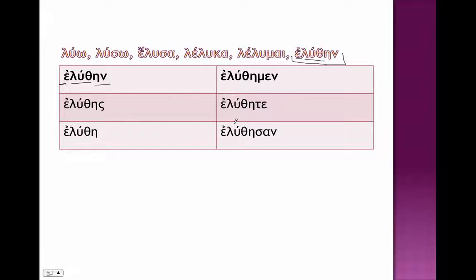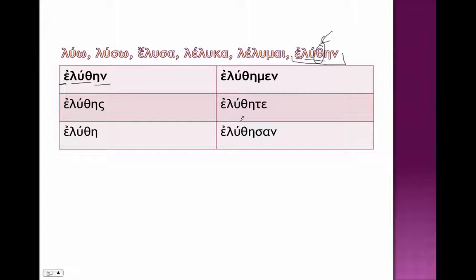One thing to keep in mind when you're reading Greek: most aorist passive endings, most sixth principal parts, have a stem that ends in theta. So if you see a stem that ends in theta, that's most likely what you're dealing with — theta plus the endings: eleuthain, eleuthes, eleuthay, eleuthamen, eleuthete, eleuthesan. That theta is not always there, and sometimes the stem has mutated; you can't always predict what that sixth principal part is.